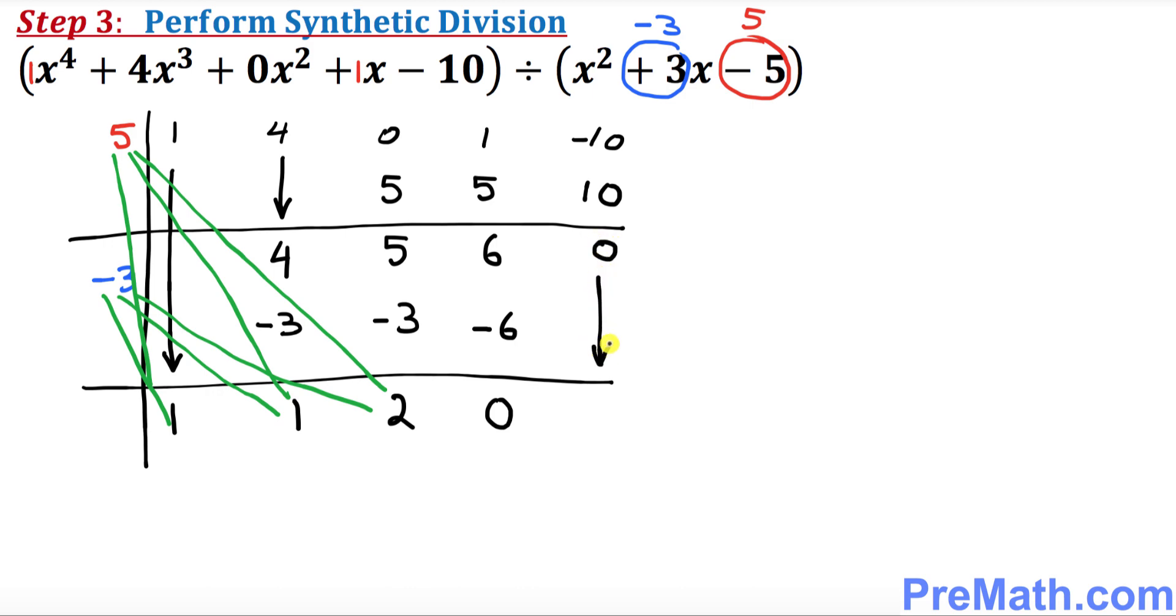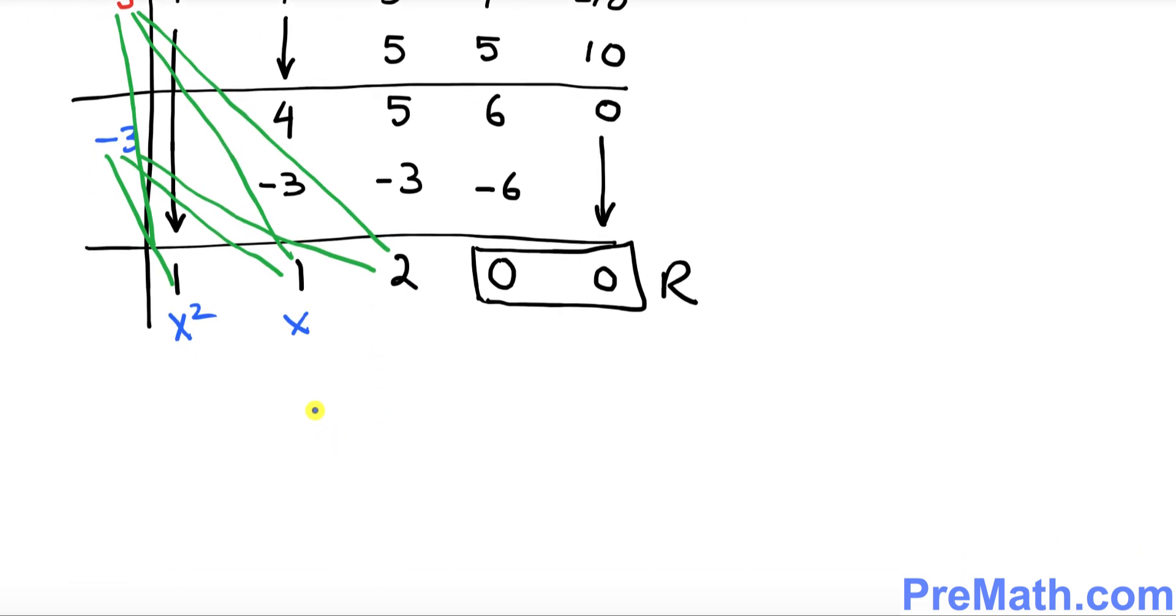So this 0 is going to show up as is. That means these 0, 0s are our remainder R. So next thing is, this is going to be x squared, this is going to be x, and this is going to be a constant without x. So what we got so far is 1 times x squared, which is 1x squared, plus 1x, and this is going to be plus 2. And that is our complete answer.